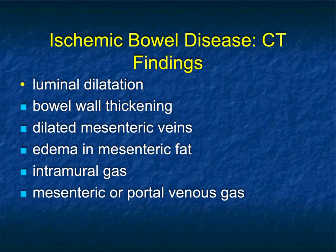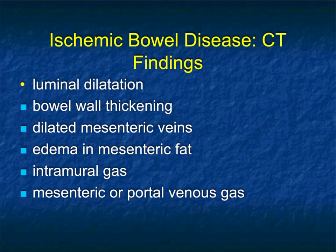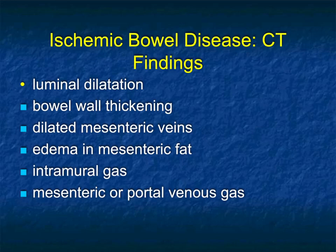What about ischemic bowel disease? It's something we look for many times and one of the common things to think about in older patients with acute abdomen. We look for luminal dilatation, bowel wall thickening, dilated mesenteric veins, edema in the bowel wall, intramural gas, and mesenteric and portal venous gas. It's a spectrum from early to late disease — when you have late disease, you're looking for air in the bowel as well as portal venous air. It's not necessarily fatal to have portal venous air or air in the bowel wall, but it does mean you have ischemia and likely infarction, with high morbidity and mortality. We'll take a break here and pick up in part two.